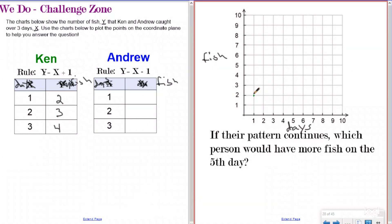So one, two. On the first day, he caught two fish. On the second day, he caught three fish. And on the third day, he caught four fish. So here is my line, right? For Ken, if I plotted those again, making a straight line because I don't have any exponents in my rule.